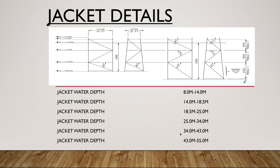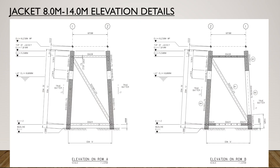These are the depths up to which we normally use fixed jacket platforms. Beyond 55 meters it is not economical and not stable, so we don't use jacket fixed type platforms beyond this depth. This is an example of the 8 to 14 meter elevation details of a jacket platform. The bottom line is called the mud line, where the jacket is embedded in the seabed.